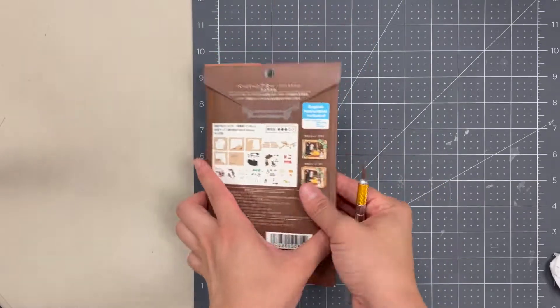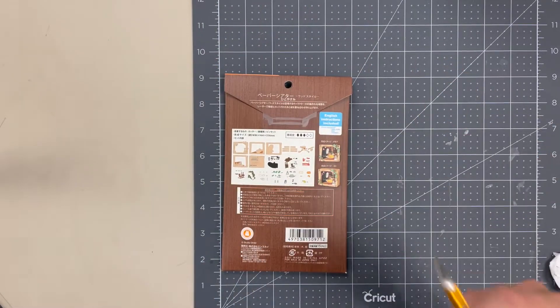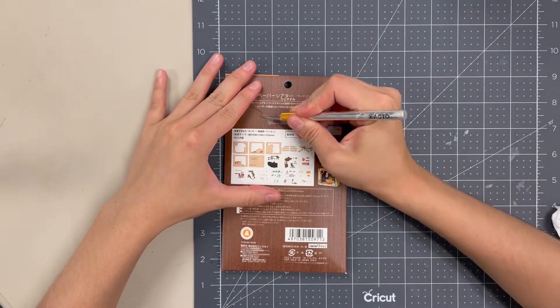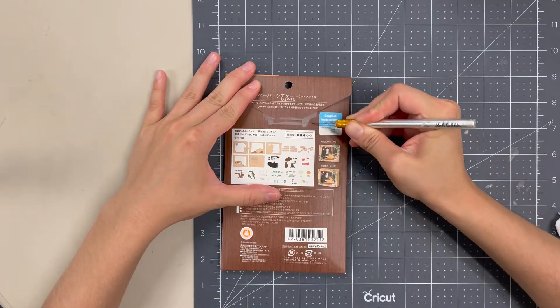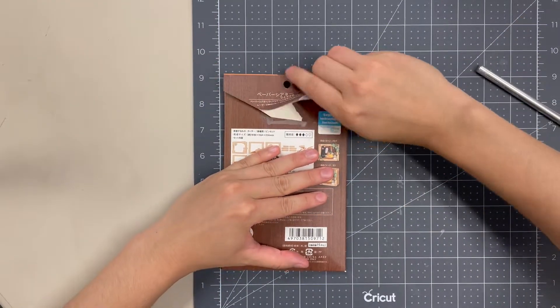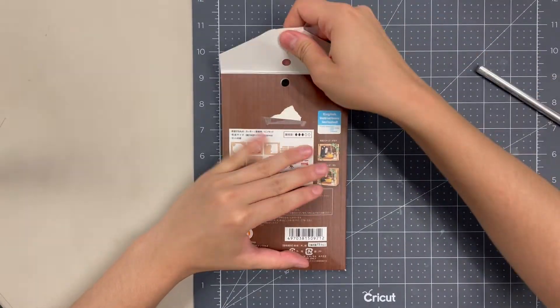Welcome back to another paper theater build. This week I'm doing a Woodstile paper theater called Break Time from the Studio Ghibli film Spirited Away. It features